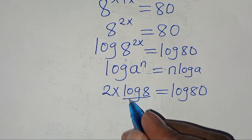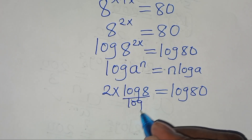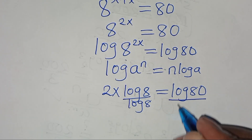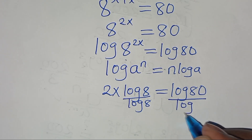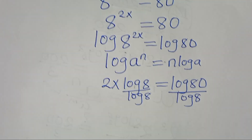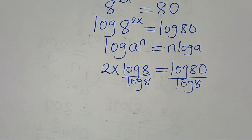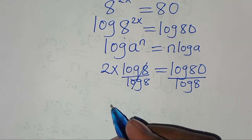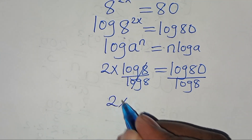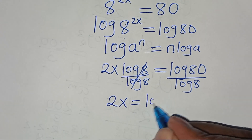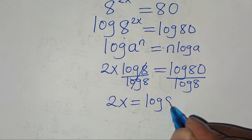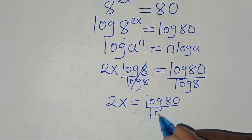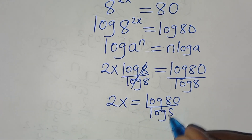This is equal to log 80. Let's divide both sides by log 8. Simplifying, we have 2x equals log 80 divided by log 8.